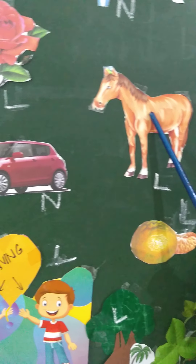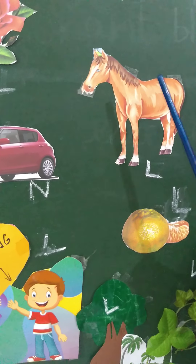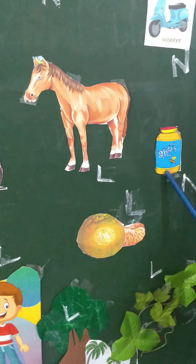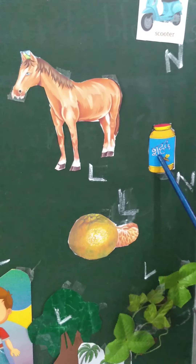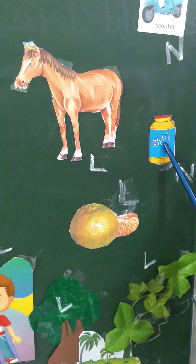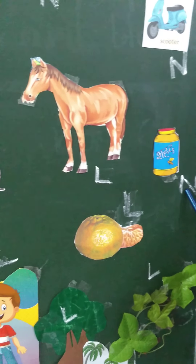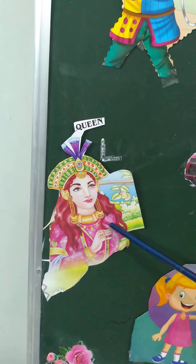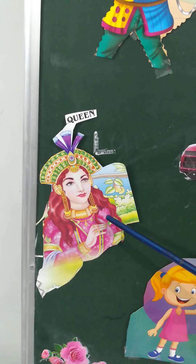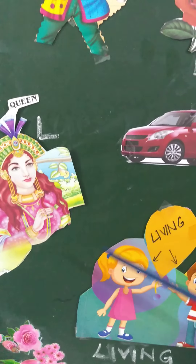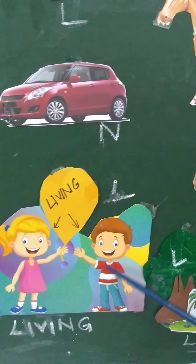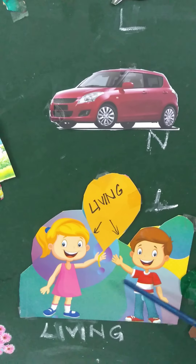The horse needs food and water to grow. It breathes and it can move. And here is a bottle of honey — it is a non-living thing. An orange is a fruit and it is a living thing. Here is a queen — she is a living thing. And a girl and boy are both living things.